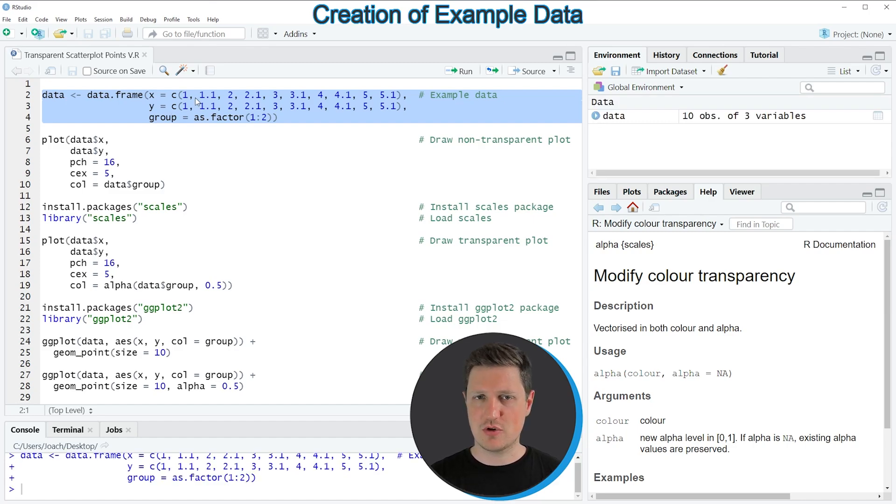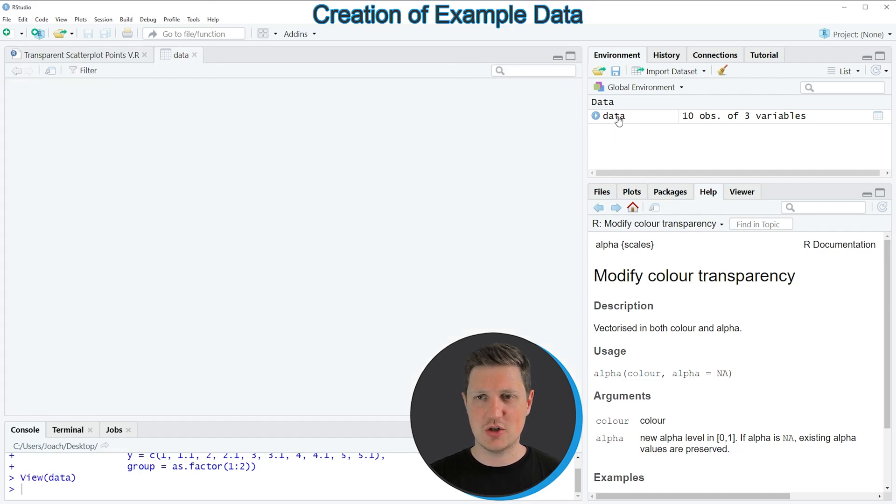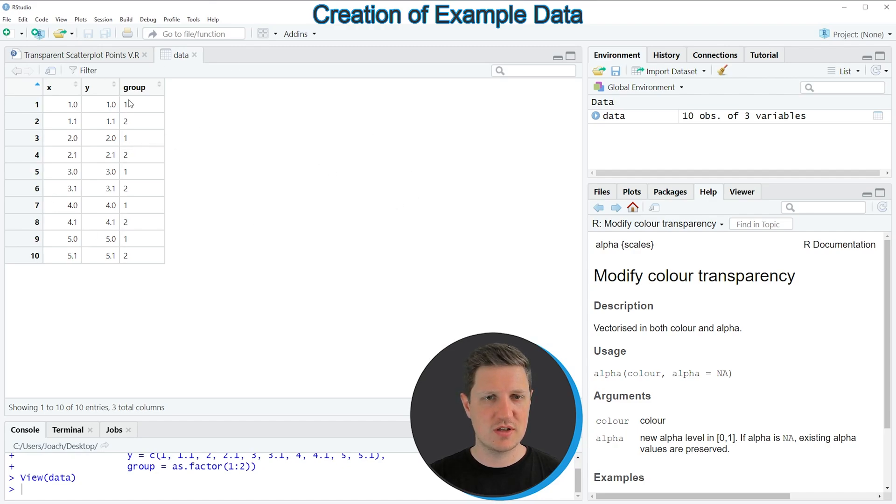So if you run these lines of code, you can see that a new data frame object appears at the top right of RStudio, which is called data. And if we click on this data object, a new window opens which is showing the structure of our data frame.